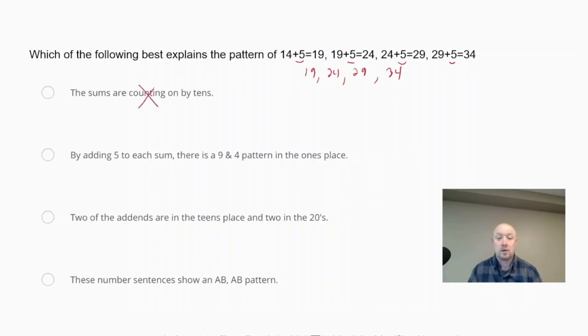The third choice says two of the addends are in the teens place and two in the 20s. So when we look at these, these are the addends, the two numbers we're adding together. One is in the teens, but one is in the ones place value. So this choice is incorrect.